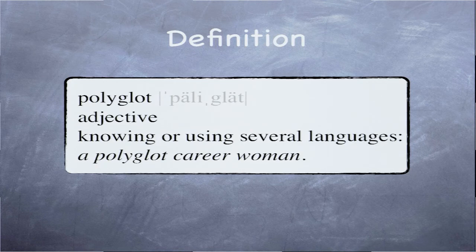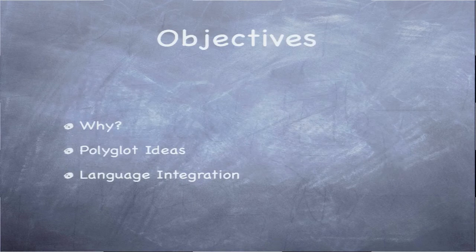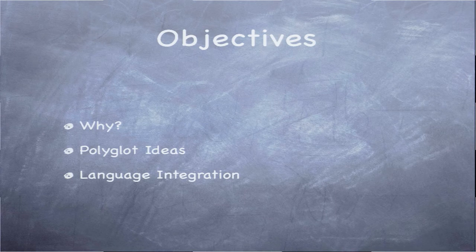All dummies books always start with definitions, so we popped open a dictionary and looked up polyglot: knowing or using several languages. Of course, we're only going to be talking about programming languages today. It's a little pedantic, but it is a dummies talk. So the things we're going to talk about today are: why you'd want to consider using polyglot, some sample ideas to spark creativity in how to use polyglot, and then some details of how to actually communicate between languages.